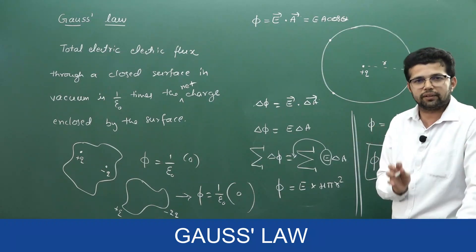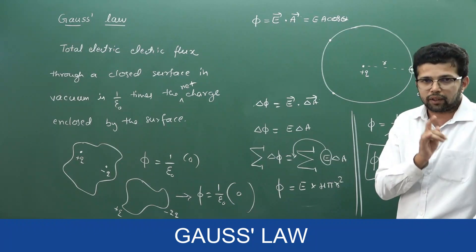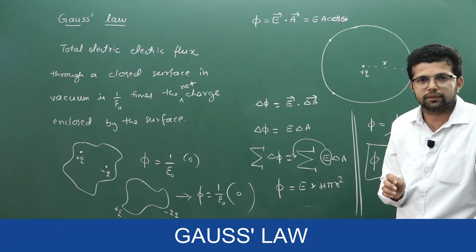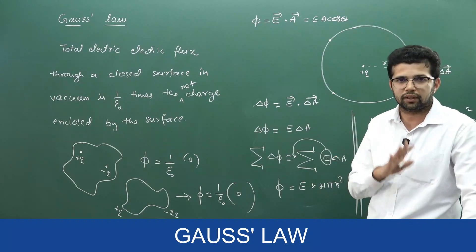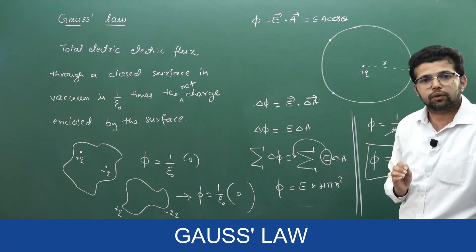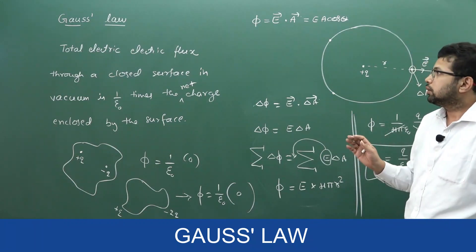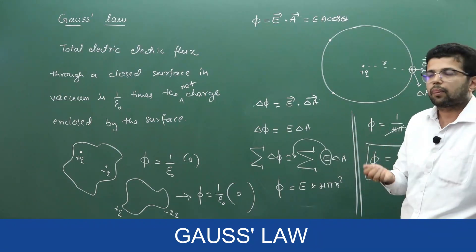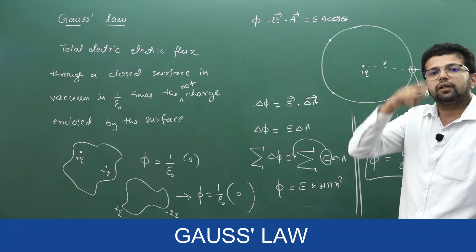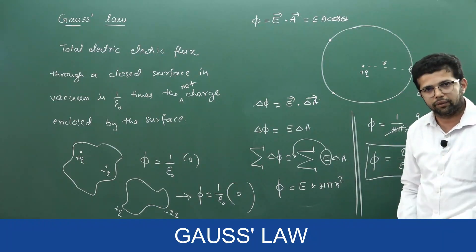If there is a closed surface and the charge is inside the closed surface, the flux through the closed surface is equal to 1 by epsilon naught times the charge enclosed by the surface. Usually Gauss law is used to calculate electric field. The next topic is calculation of electric field due to an infinitely long straight wire, which we will do in the next video.